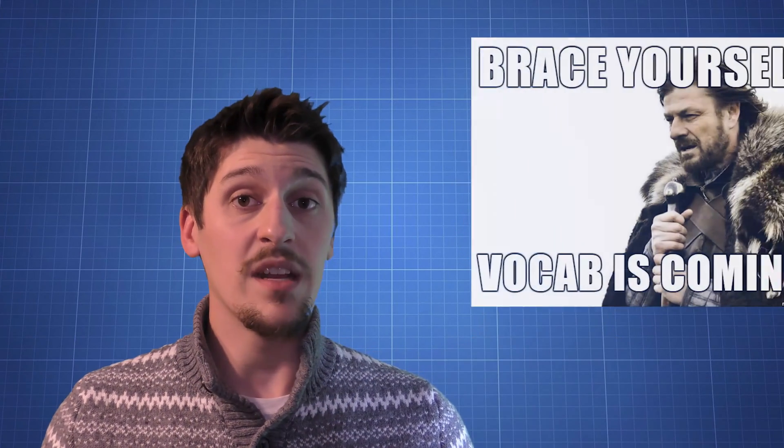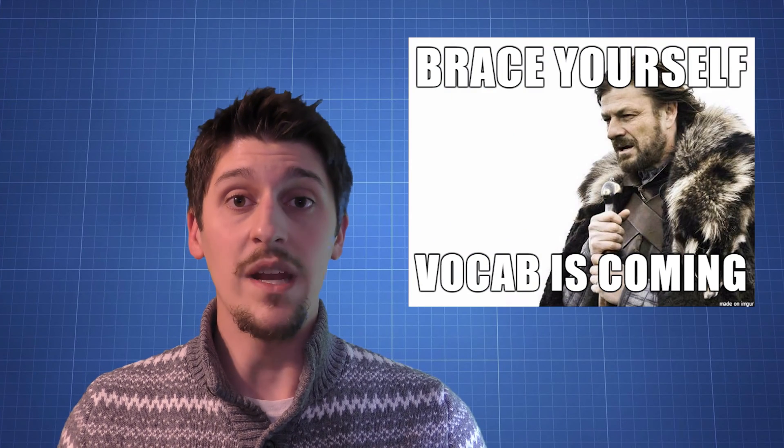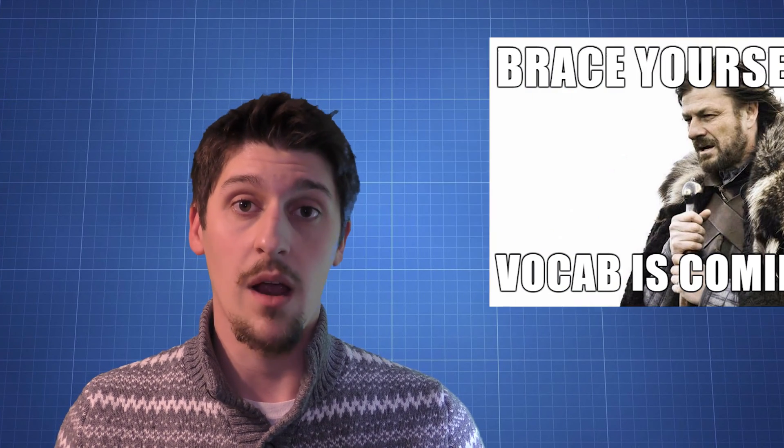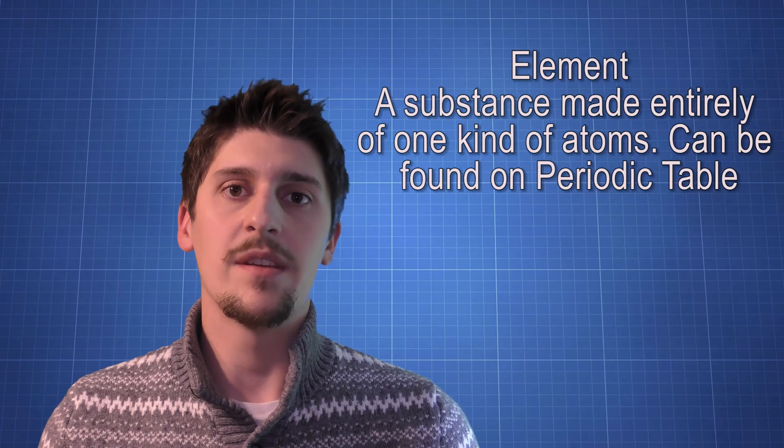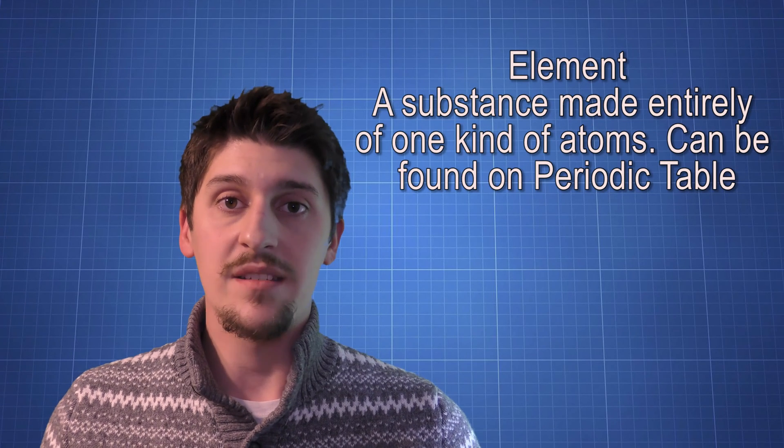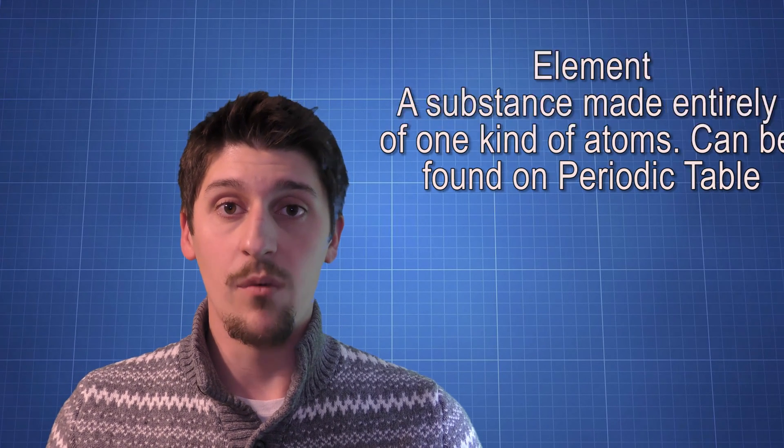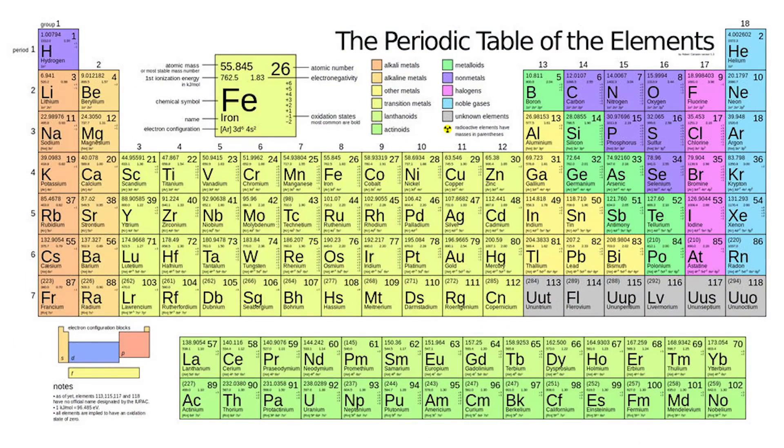Because there are so many different kinds of materials, we need some terminology in order to best describe them. Our first term is an element. An element is a pure substance made up of one type of atom. We can find elements on the periodic table, where they're organized by their material properties.